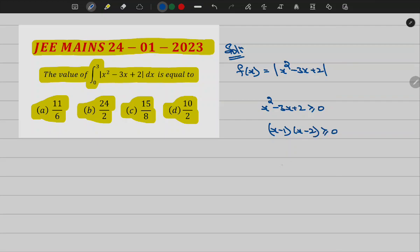Now according to the wavy curve method, here 1 and 2 plus minus and plus. But in the question he has given from 0 to 3, so let me consider 0 and 3.